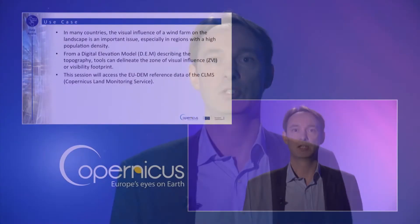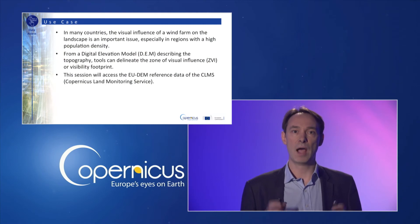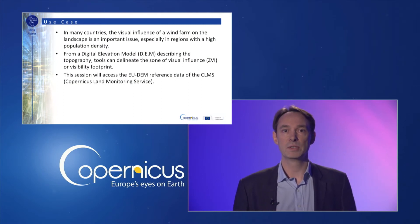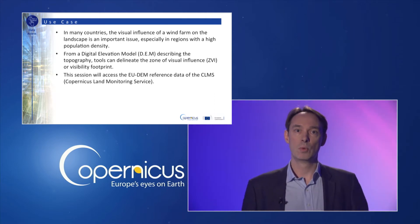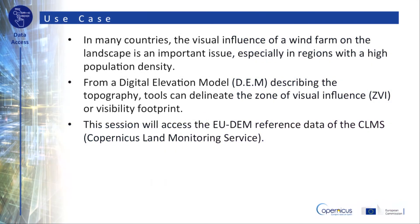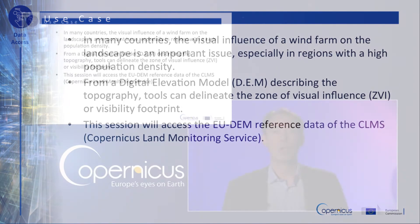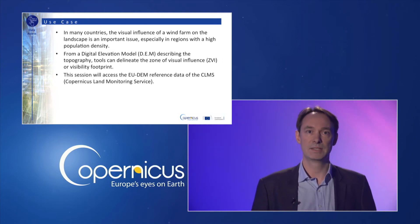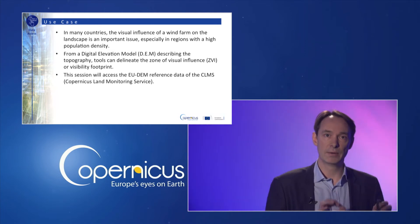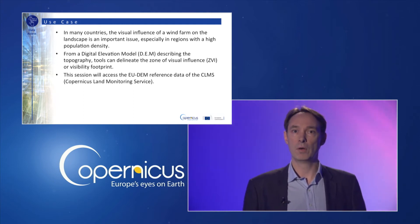In many countries, the visual influence of a wind farm on the landscape is an important issue, especially in regions with a high population density. To assess the visual influence, wind farm developers use computational design tools which delineate the zone of visual influence, also known as the visibility footprint. A crucial element to calculate this visibility footprint is a detailed knowledge of the terrain topography in the form of a digital elevation model, known as DEM.